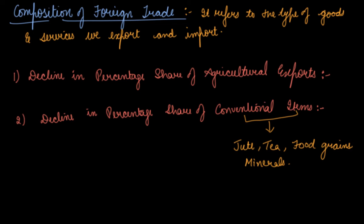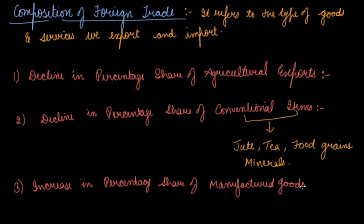And then the last one is increased percentage share of the manufactured goods. India became the exporter of finished goods now. Because due to the industrialization, the strategy for the industrial growth that was taken from 1950 to 1990.